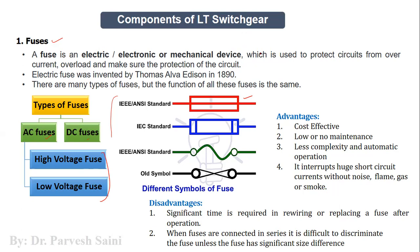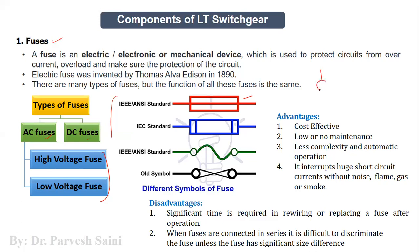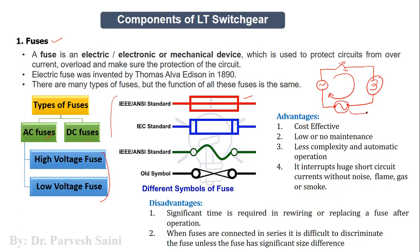A fuse is a circuit protection device always installed in series with the circuit. For example, with an AC supply and a switch connected to a bulb, the fuse is installed in series. When the switch is closed and current starts flowing, if the current exceeds its limit, because this fuse has a wire inside it with a melting point, and if the current increases beyond the permissible value, the I²R effect generates heat which raises the temperature.